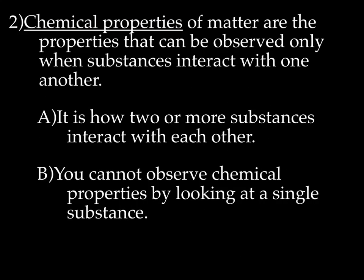A chemical property, on the other hand, are properties that can be observed only when substances interact with one another — and that's basically a chemical reaction. You cannot observe chemical properties by looking at only a single substance. When chemicals interact with each other, they're going to change, and to study a chemical property, you're actually changing the substance's makeup.